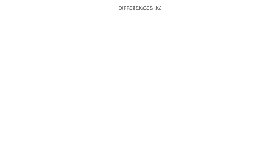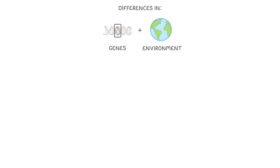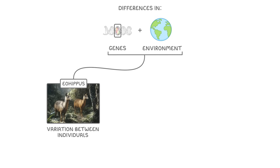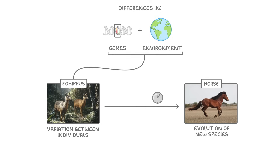In today's video, we're going to see how the differences in both our genes and our environment can lead to huge variation between different individuals, and how over time this can lead to the evolution of new species by a process we call natural selection.